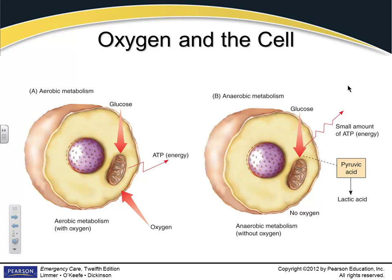Here is an example of aerobic versus anaerobic metabolism. In the presence of oxygen and glucose, the cell creates a good amount of ATP — 36 moles. With anaerobic, we have glucose but no oxygen. What is produced is pyruvic acid, which turns into lactic acid — that nasty burn we get — and only about 2 moles of energy are produced.